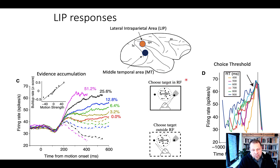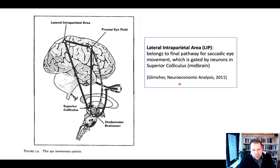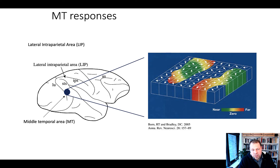If the target is moving into the receptive field of the neuron, we see an upward ramping of neurons that code for that specific direction. By receptive field, we mean the specialized encoding of direction for a particular column of neurons.